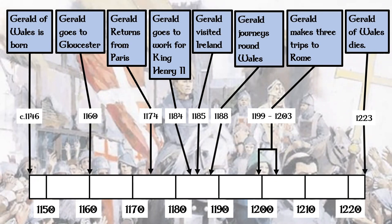Three years later, in 1188, Gerald, then with another priest of King Henry's, travels around Wales visiting different monasteries and churches, and also writes several books of his journey through Wales. Eleven years later, in 1199, Gerald makes the first of his three trips to Rome. The second trip is made in 1201, and the third trip is made in 1202, carrying on till 1203. In 1223, Gerald of Wales dies in Hereford.